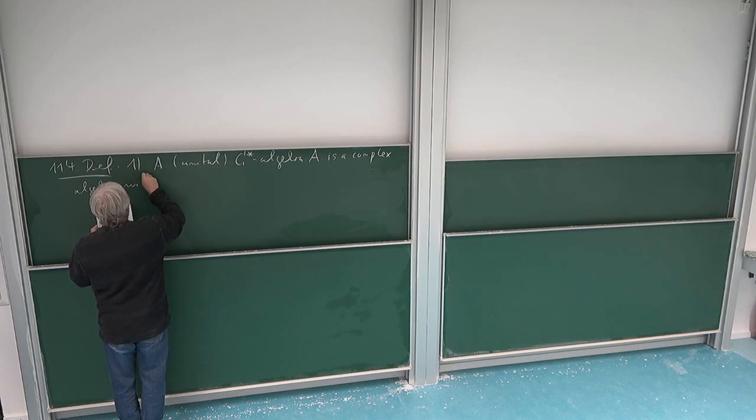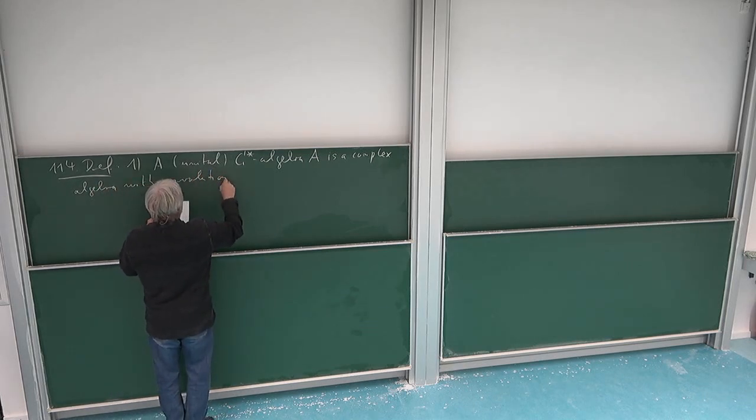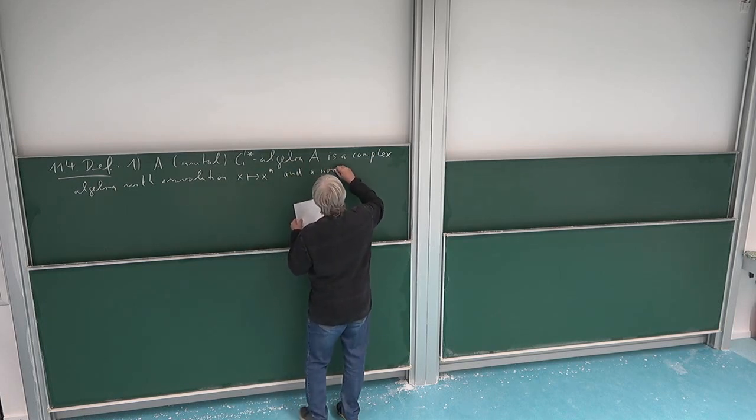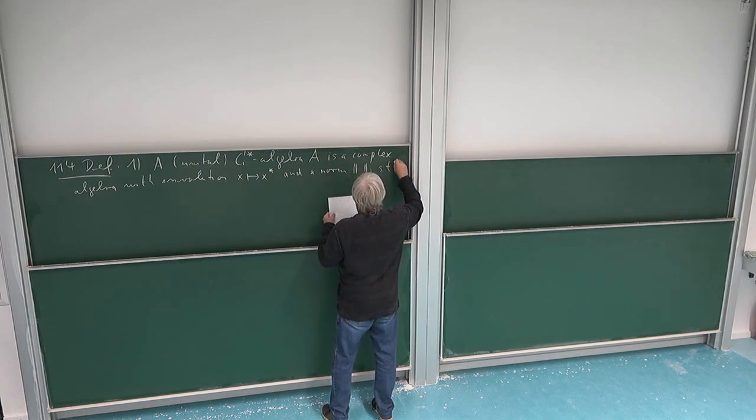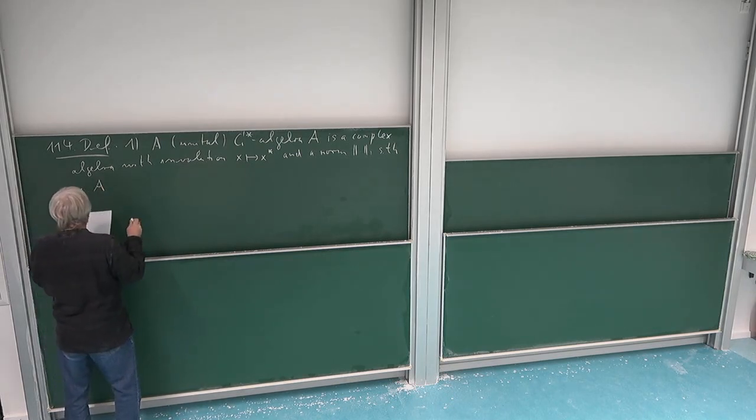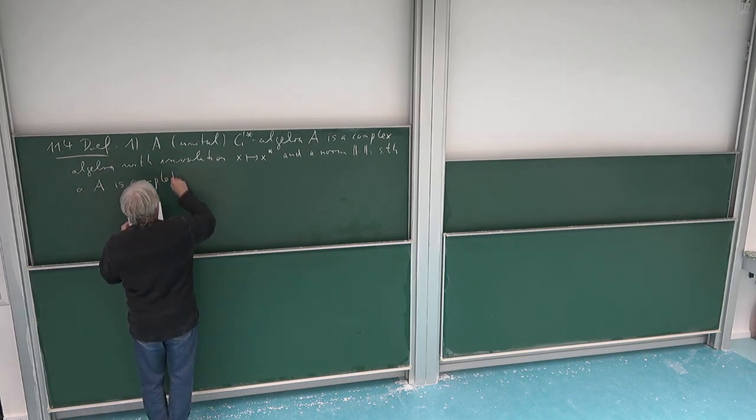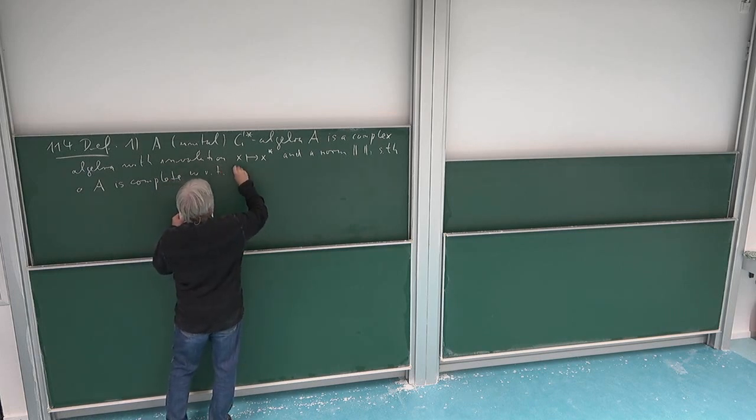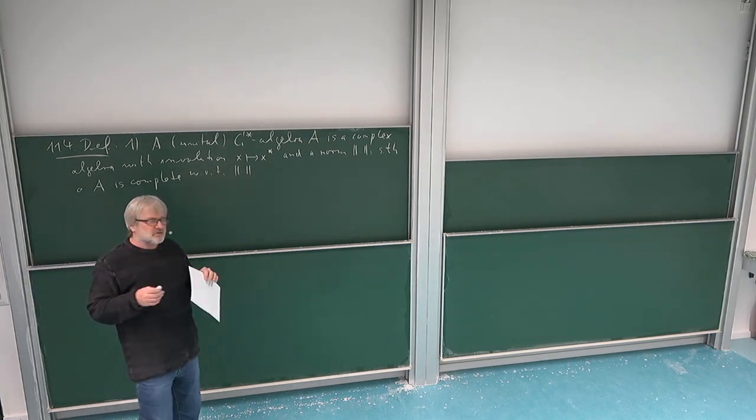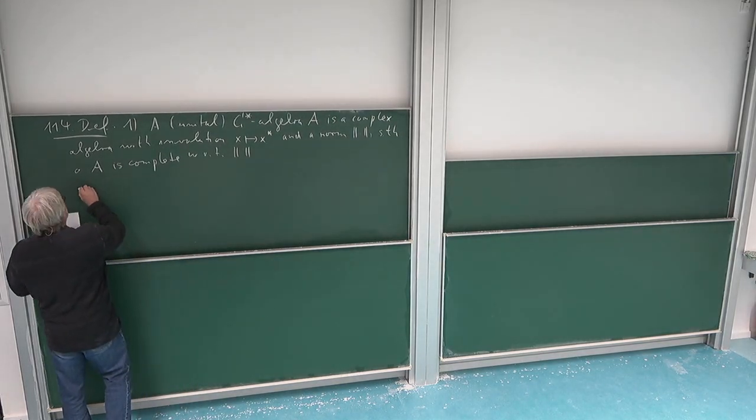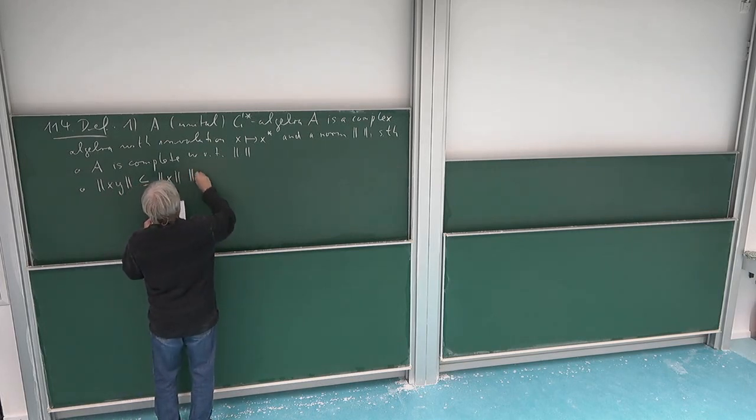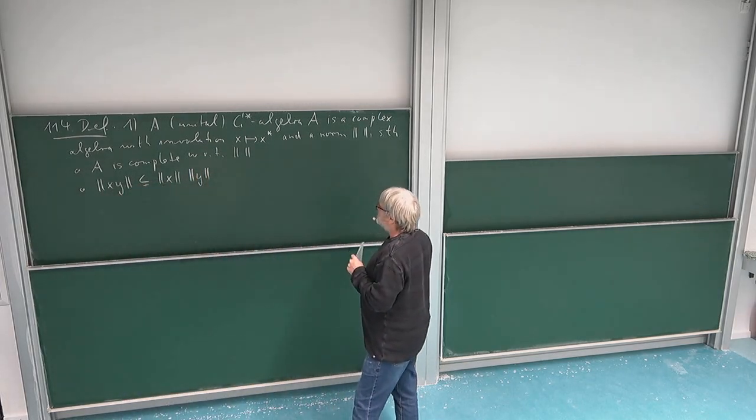We have an involution, which we denote by the star, x goes to x star, and we have a norm. Of course, this algebra should be complete with respect to the norm, so it's a Banach algebra. It's complete with respect to the norm. Then, maybe Banach algebra also means that I should have a kind of multiplicative version of the triangle inequality. Norm always requires a triangle inequality for the sum, but here we are in a setting on algebra. So we have a product and then I should of course also require for the product this property.